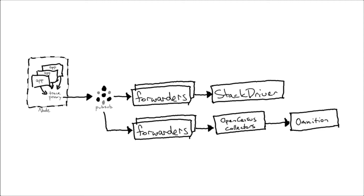We still had to figure out context propagation, but it was a big step forward. First, though, we had to migrate our pipeline. We did this in a couple of steps. We started by building a receiver for our custom trace format. We already had most of the code for this in our trace proxy, conveniently written in Go, so we just had to port that, add some configuration, and translate to the collector's in-memory format. We deployed the collectors in each cluster.